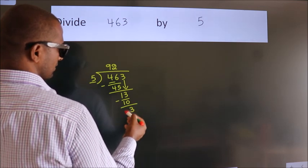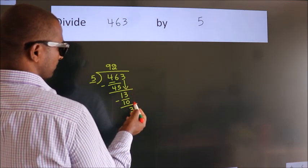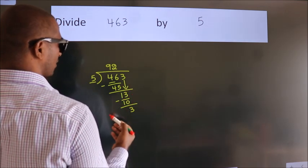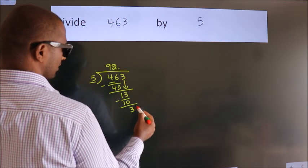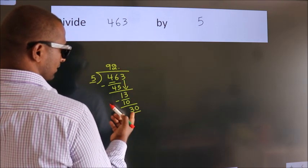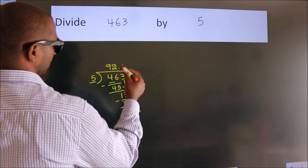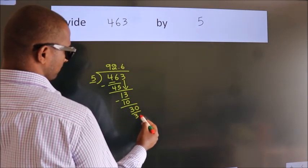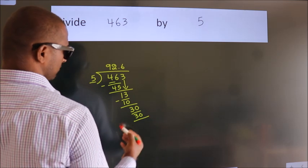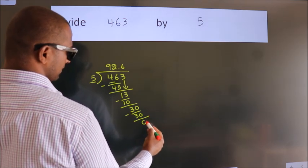After this, no more numbers to bring down. So what we do is put a dot and take 0, making 30. When do we get 30 in the 5 table? 5 times 6 equals 30. Now we subtract and get 0.